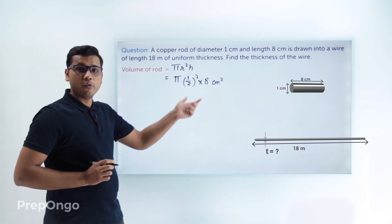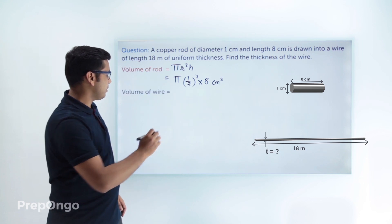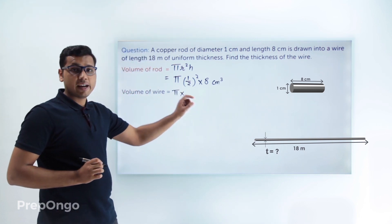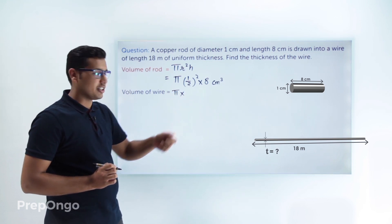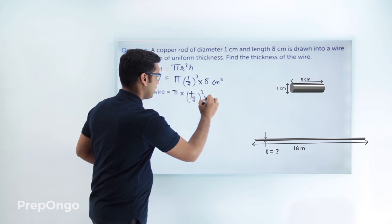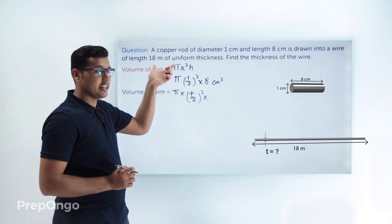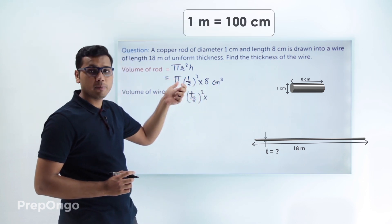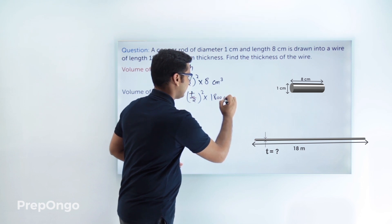Similarly, the volume of the wire — which is again in the form of a cylinder — equals π × (t/2)² × length. The length is given as 18 meters, but we need to convert to centimeters to keep units consistent, so we multiply by 100, giving 1800 centimeters. So the volume of wire is π × (t/2)² × 1800 cubic centimeters.